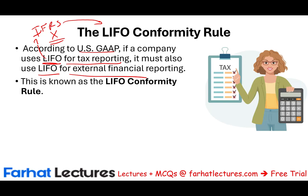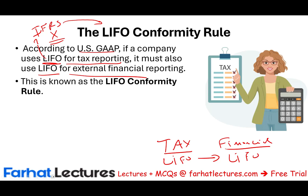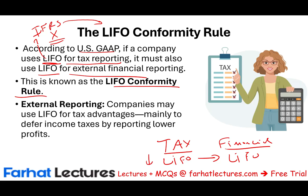Once you use LIFO for tax purposes, you must also use LIFO for financial reporting. You cannot use FIFO externally and enjoy the best of both worlds — lower taxes and higher income. Companies use LIFO for tax advantages mainly to defer taxes by reporting lower profit, saving money now due to the time value of money. That is the main reason US companies use LIFO.